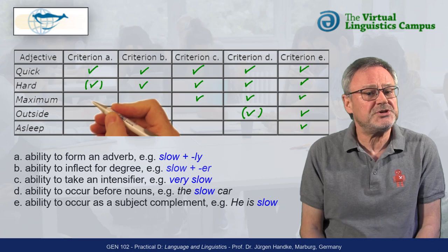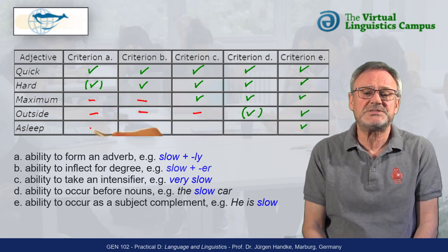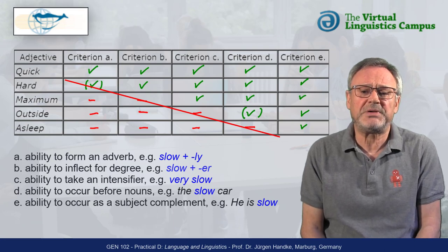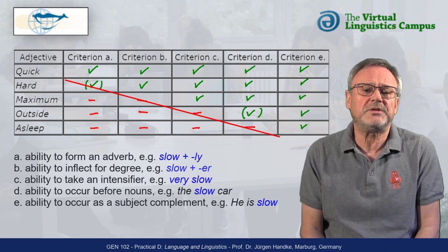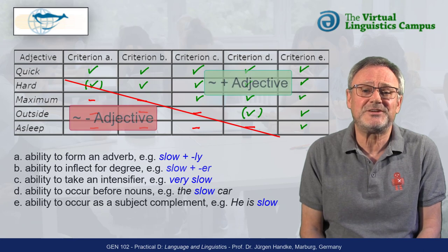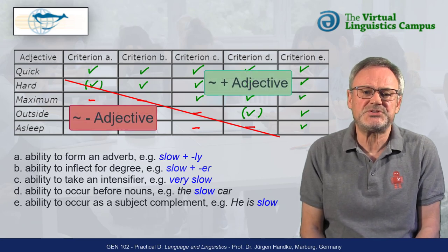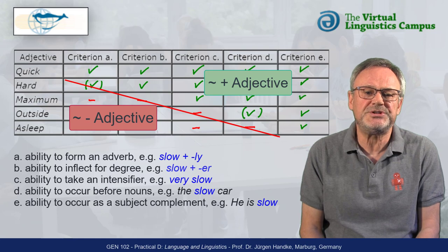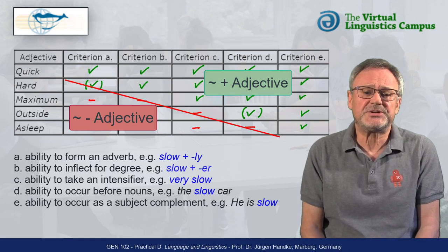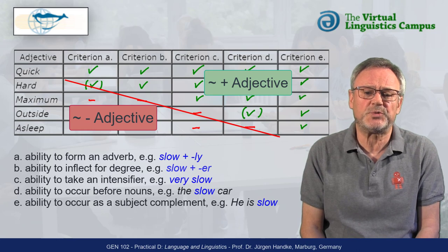For the definition of the word class of adjectives, this means that there is a gradience. That is, there is no clear boundary between these words as far as their adjectivehood is concerned. Hence, word classes are not as homogeneous as we often think — adjectives constitute a heterogeneous word class.